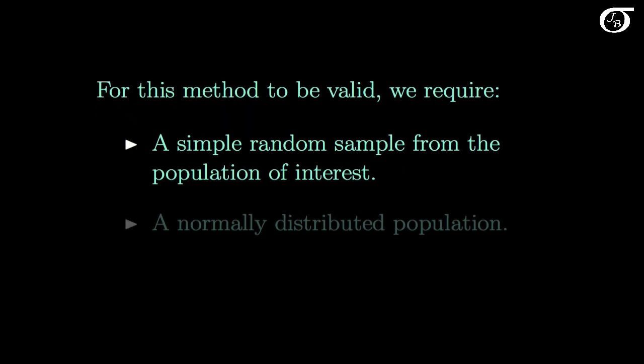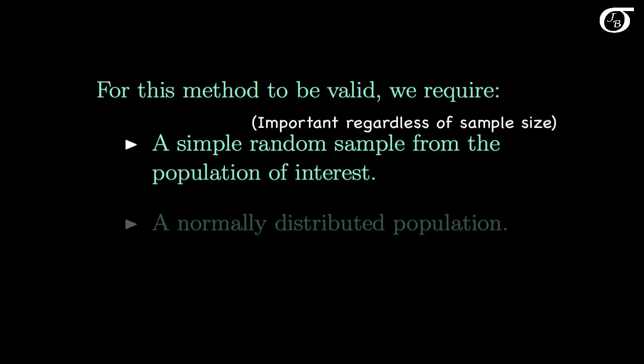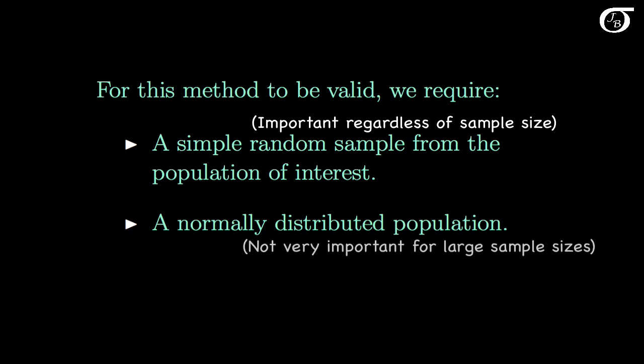For this method to be valid, we require first a simple random sample from the population of interest, and it's always going to be important to have a good sampling design regardless of the sample size. Second, we need a normally distributed population, although this assumption will not be important if we have a large sample size. For the remainder of this video, I'm going to investigate this normality assumption in greater detail.